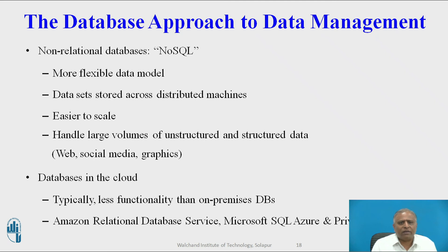Next is the non-relational database, or NoSQL. It offers a more flexible data model, with data sets stored across distributed machines and easier scalability. It handles large volumes of both unstructured and structured data. Database in the cloud typically has less functionality than on-premises databases. Examples include Amazon Relational Database Service, Microsoft SQL Azure, and private clouds.